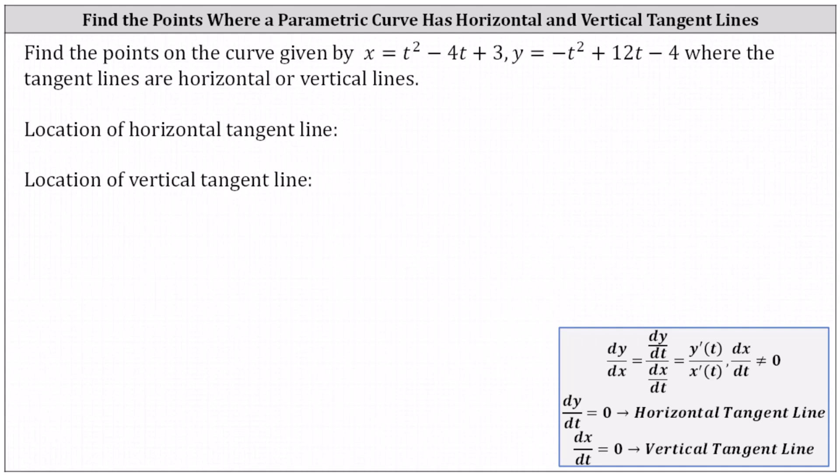We're asked to find the points on the curve given by x equals t squared minus 4t plus 3 and y equals negative t squared plus 12t minus 4 where the tangent lines are horizontal or vertical.